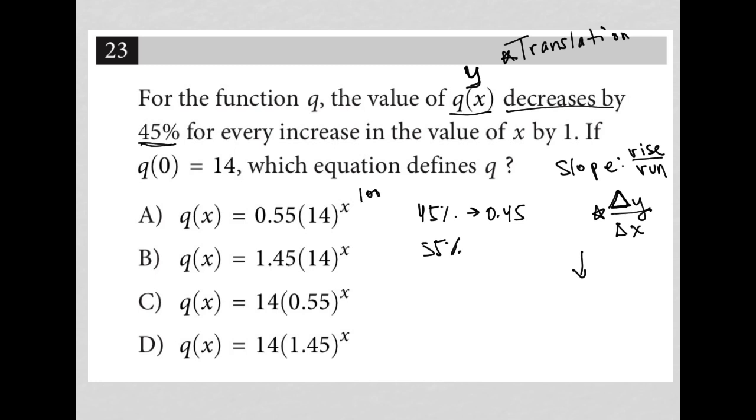So if I were at 100 and I decreased by 45%, I'm now at the number 55. So 55%, which as a decimal is 0.55. So my change in y is actually 0.45.